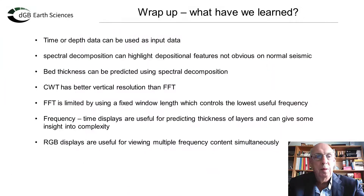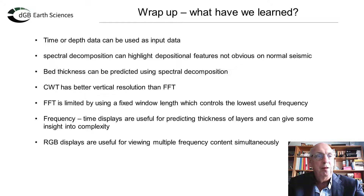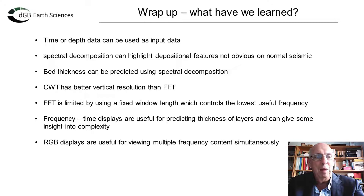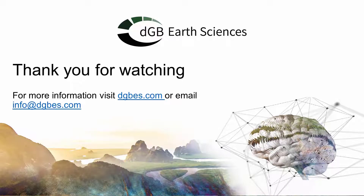Here are the tabulated results of the aerial calculations — I'll let you work out if this is an economic gas column. So what have we learned? Time or depth data can be used as input — it doesn't really matter which. Spectral decomposition can highlight depositional features not obvious on normal seismic. Bed thickness can be predicted using spectral decomposition. Continuous wavelet transforms have better vertical resolution than fast Fourier transform. The fast Fourier transform is limited by using a fixed window length, which controls the lowest useful frequency. Frequency-time displays are handy for predicting thickness of layers and can give insight into geological complexity. And finally, RGB displays are useful for viewing multiple frequency content simultaneously. I hope you've picked up some tips and I'll be happy to take any questions.